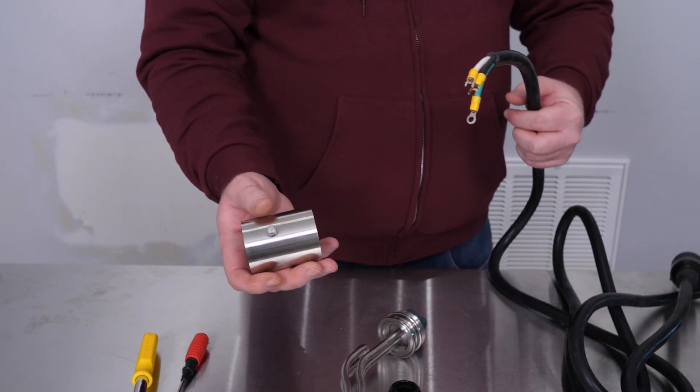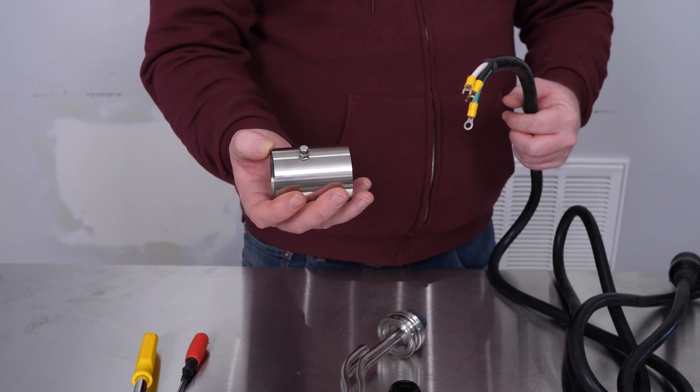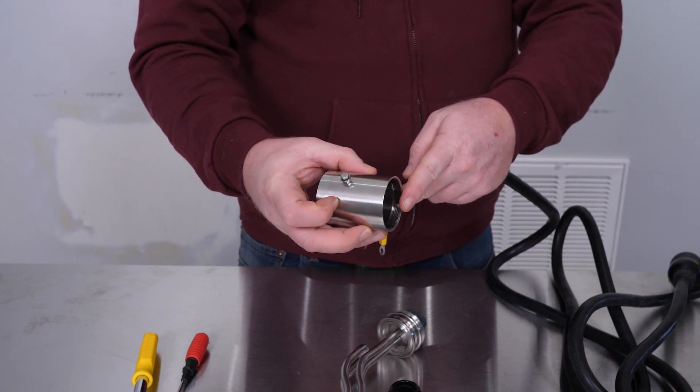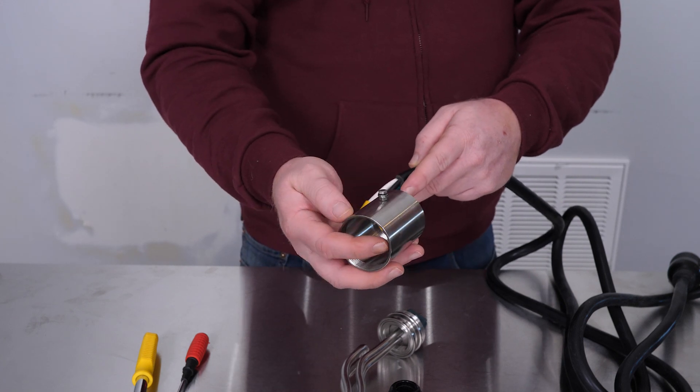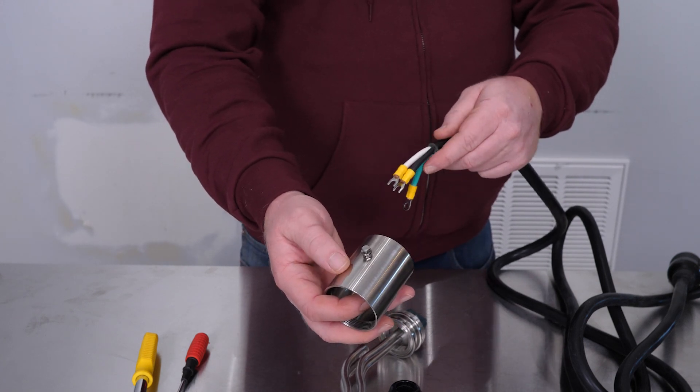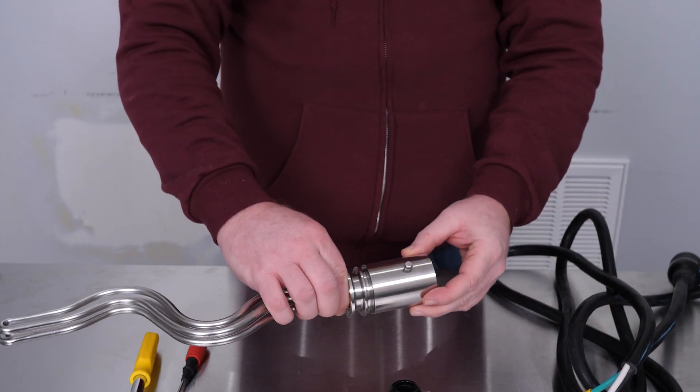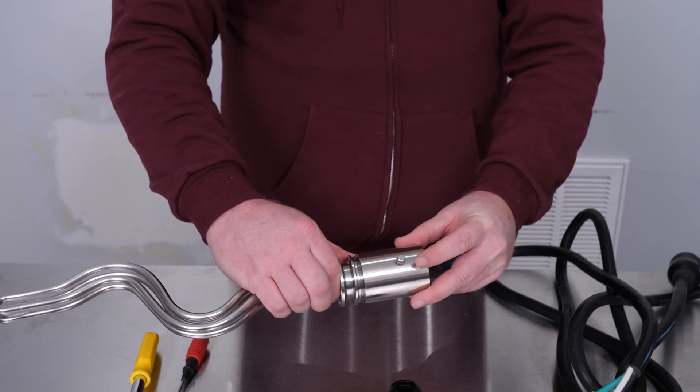Next, take the sleeve. You can see the ground screw is not centered. Put the portion of the sleeve that has more space towards the element, so you have the ground screw towards the back with less space.